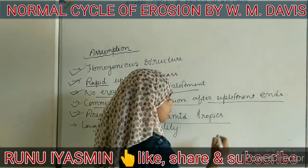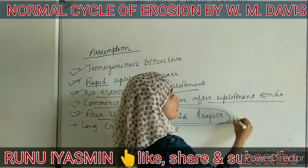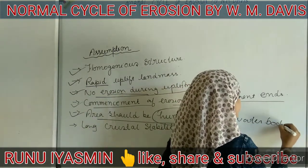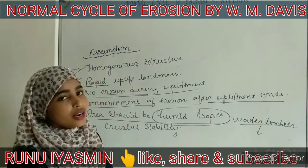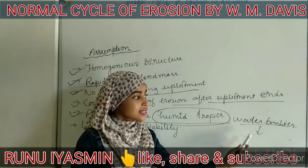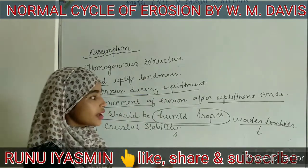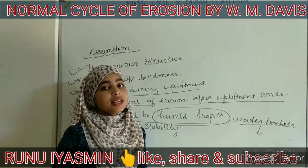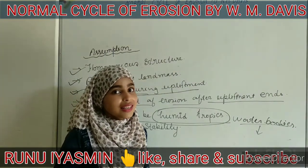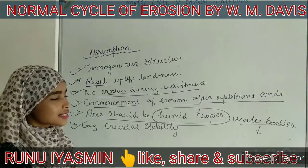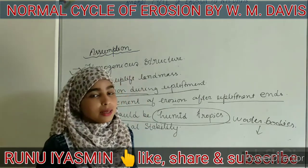Next, the area should be humid tropic. A humid area means where there is an above-average level of water bodies, which will be producing many consequent, subsequent, or any kind of water bodies. Water is the main medium for erosion. According to W.M. Davis, the area where erosion takes place should have many rivers present. That is why the W.M. Davis cycle of erosion is known as the normal cycle of erosion. Next is crustal stability.